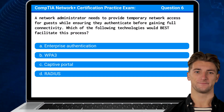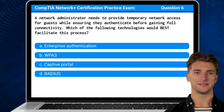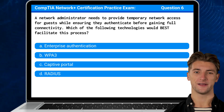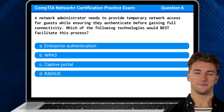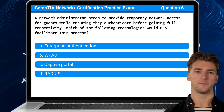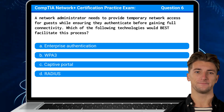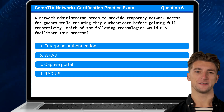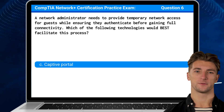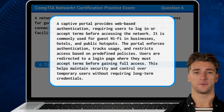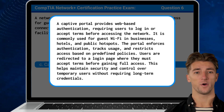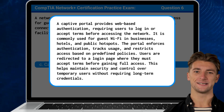Question 6. A network administrator needs to provide temporary network access for guests while ensuring they authenticate before gaining full connectivity. Which of the following technologies would best facilitate this process? The answer is C: Captive Portal. A captive portal provides web-based authentication, requiring users to log in or accept terms before accessing the network.